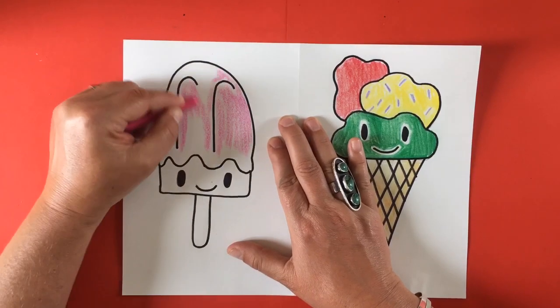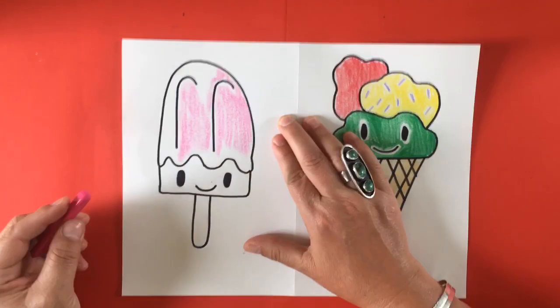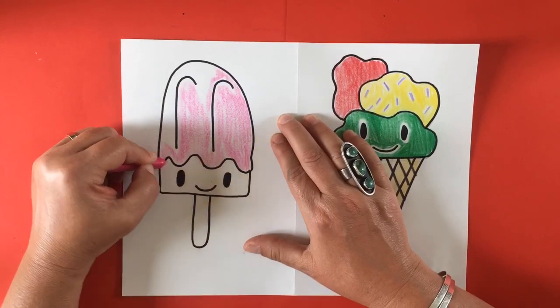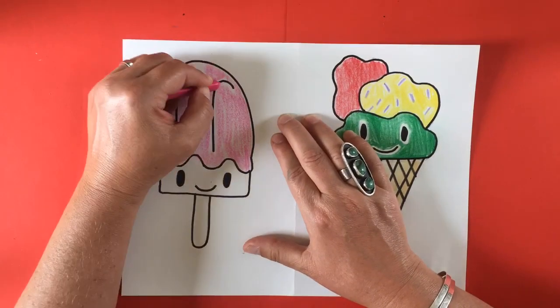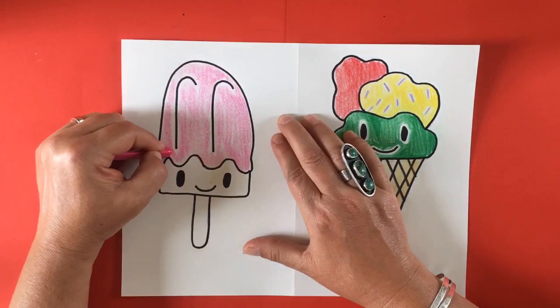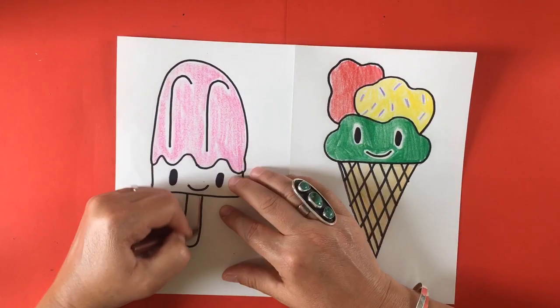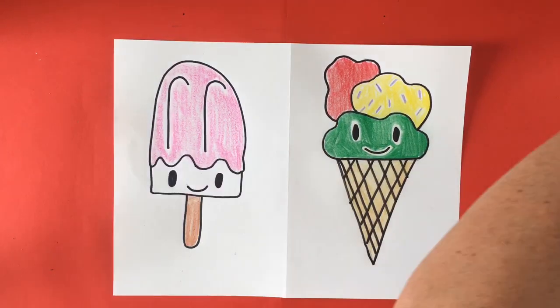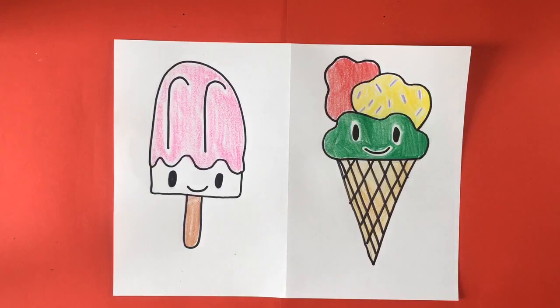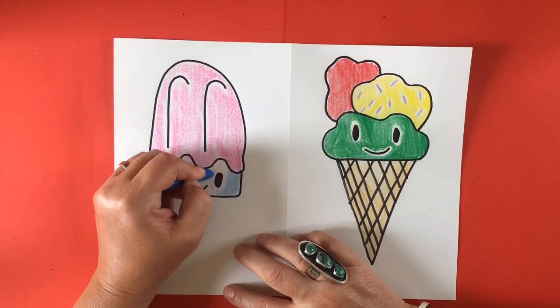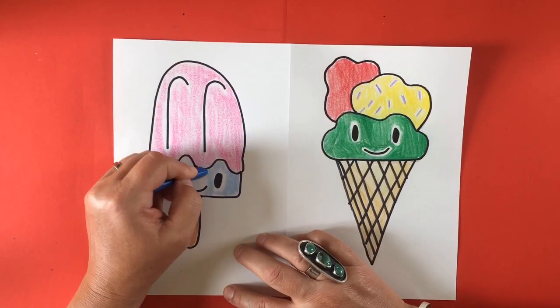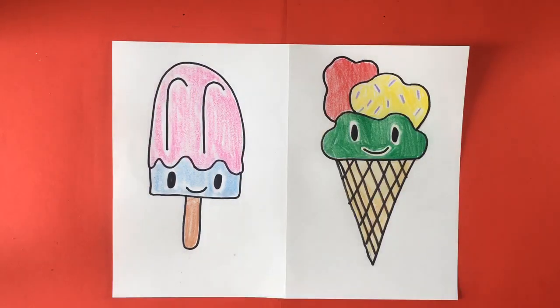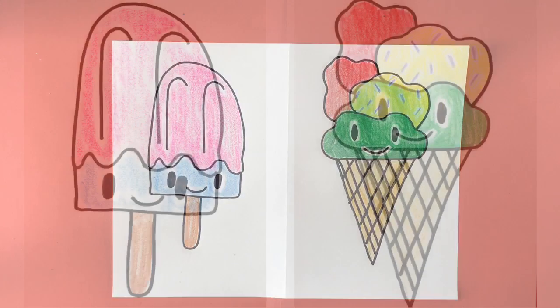On my popsicle I decided to use color crayons to color in my picture and here I'm using pink for my first top part of my ice cream. I'm going to do my stick in brown and now I'm thinking about the face. I think I'm going to do blue, leaving a little bit of white around the eyes. I like that.